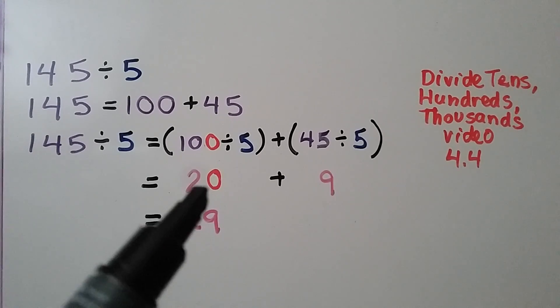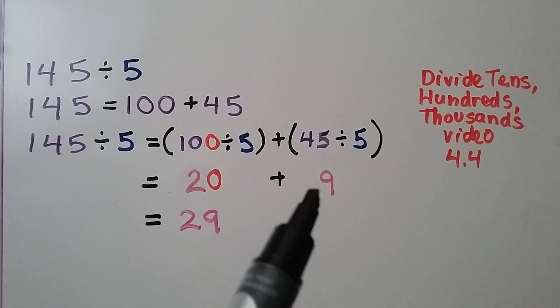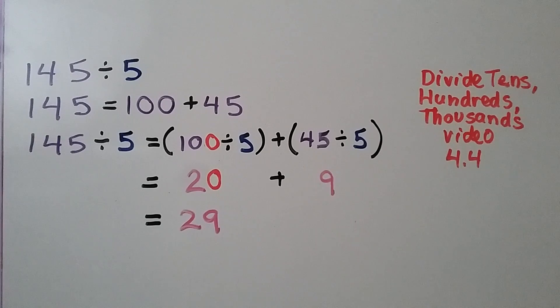so we have a 2 with a 0. We have a 20. 100 divided by 5 is equal to 20. 45 divided by 5 is 9. Our quotient is 29.